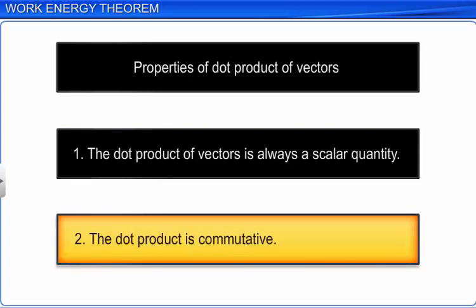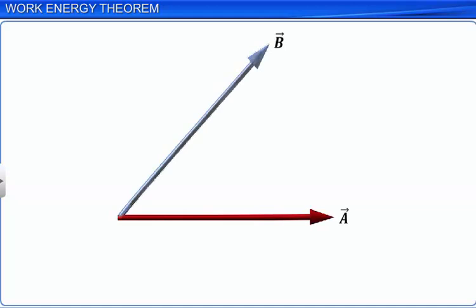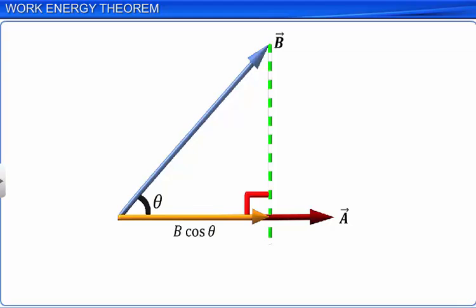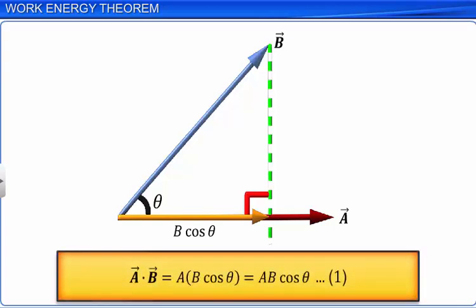Now let's see some properties of the dot product of vectors. Property 1: The dot product of vectors is always a scalar quantity. Property 2: The dot product is commutative. Consider two vectors A and B inclined as shown. Theta is the angle between the two vectors. The component of one vector in the direction of the other is called the projection of the vector on the other vector, and is denoted by the product of the magnitude of the vector and the cosine of the angle between them. Hence, B cosθ is the projection of vector B on vector A. So the dot product of A and B can be written as A into B cosθ, which equals AB cosθ. Let this be equation 1.